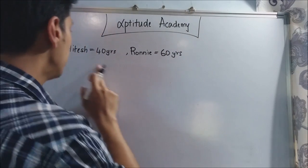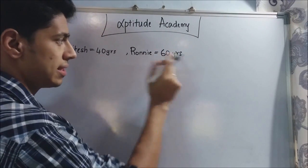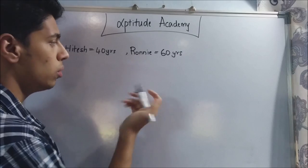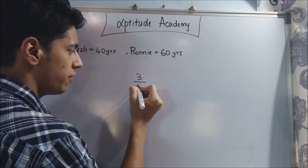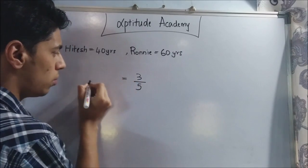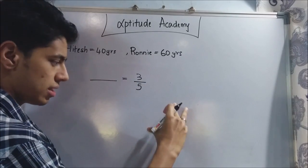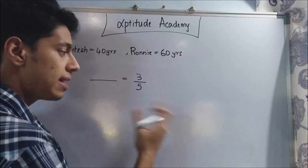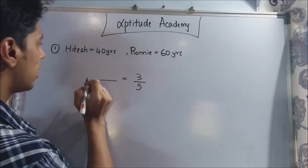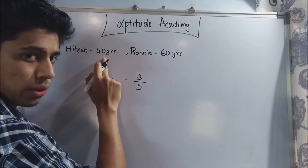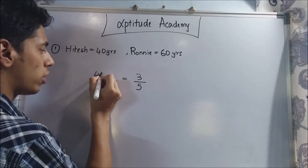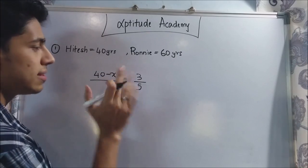The first sum is very easy. They have told you that Hitesh is 40 years old and Ronnie is 60 years old. They have asked you how many years ago was their age ratio 3 is to 5. Now you want to know what is x. In the first video I told you that if the current age is 40, then x years ago will be 40 minus x. So if his current age is 40 years old, x years ago it will be 40 minus x. Let us assume that the answer is x years ago.